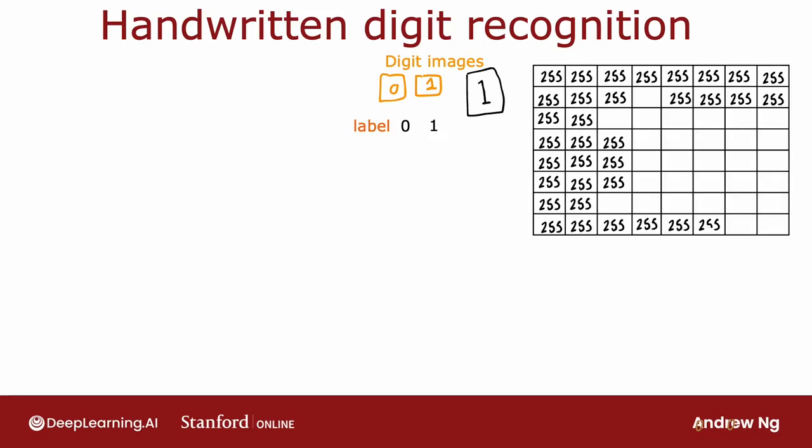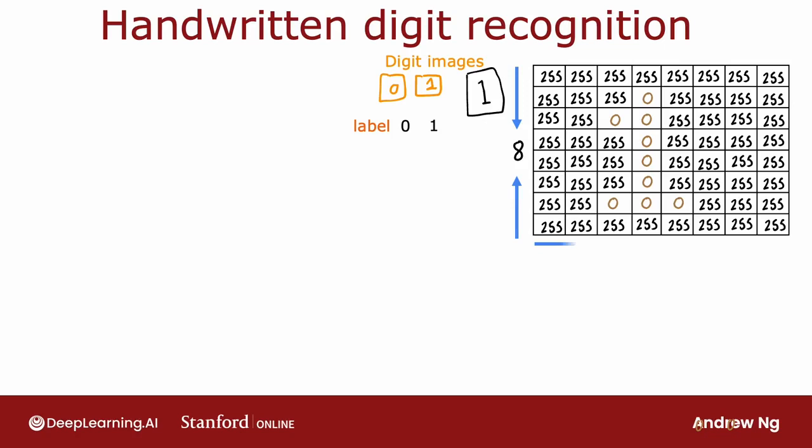For the example on this slide, I'm going to use an 8 by 8 image. And so this image of a 1 is this grid or matrix of 8 by 8 or 64 pixel intensity values where 255 denotes a bright white pixel and 0 would denote a black pixel and different numbers are different shades of gray in between the shades of black and white.